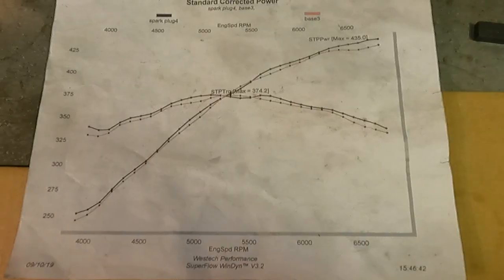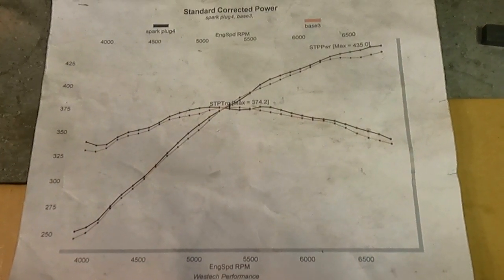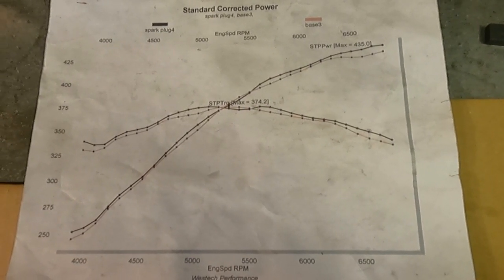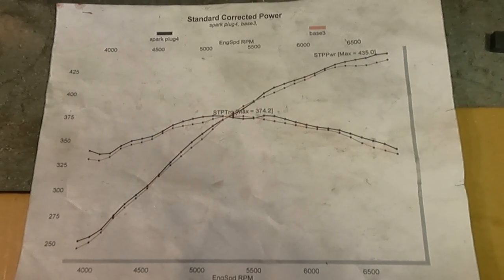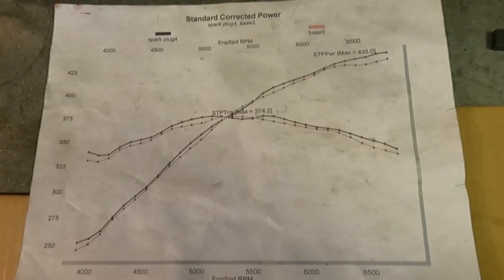Here we have a dyno sheet. This is early on in the game with our first version spark plug, not the one you saw in the last video but a little bit earlier version of it. And they were worth, in version one, about seven or eight horsepower.